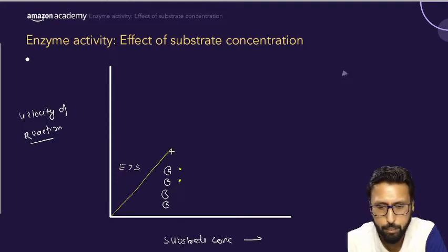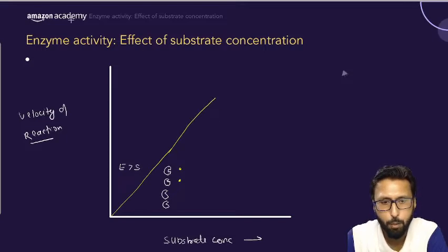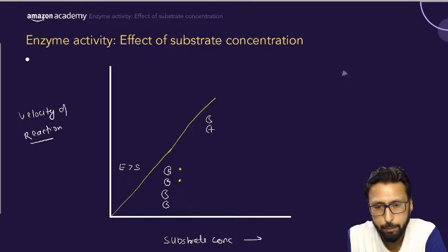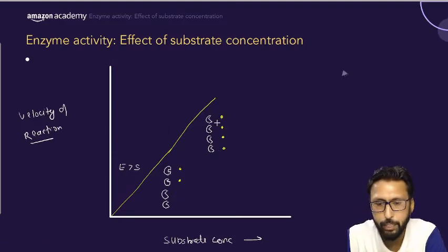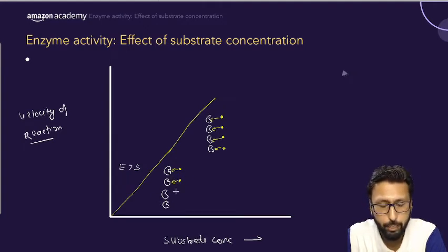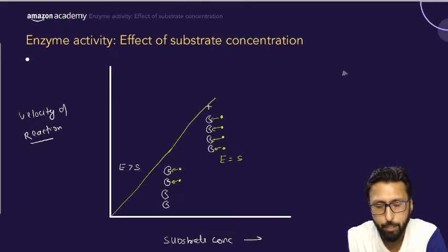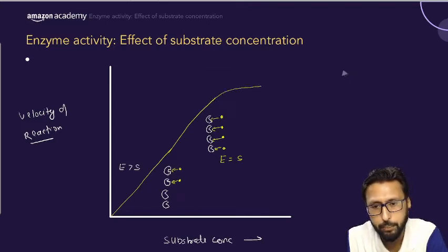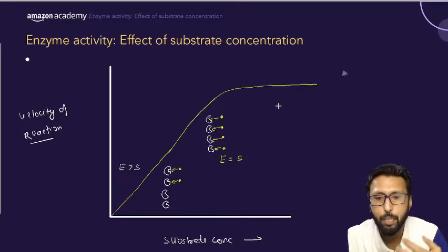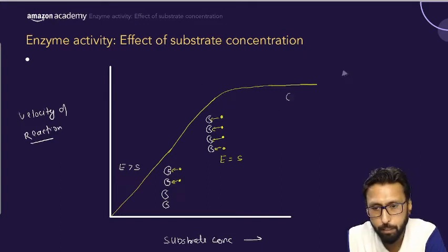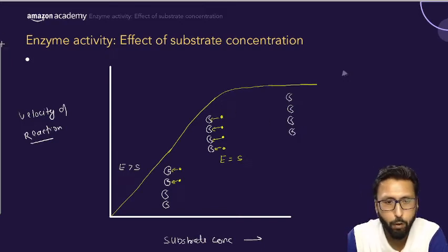When we start to increase the substrate concentration, it directly increases the rate of reaction. Suppose we now have four substrate molecules to match four enzymes — all enzymes become occupied. As substrate concentration increases gradually, more enzymes are utilized. When we reach the point where enzyme count equals substrate count, the enzymes perform at maximum activity and the rate of reaction reaches its maximum.